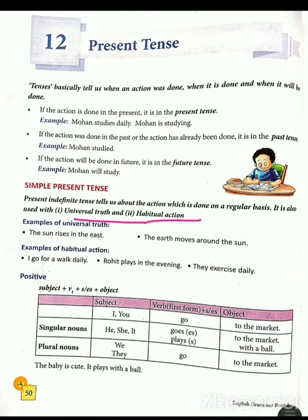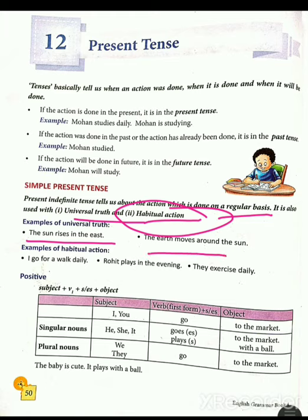Present indefinite tense hume bataata hai action ke baare mein jo hum regular basis par karte hain. It is also used with universal truths — jaise ki prithvi gol hai, so we say 'Earth is round.' Universal truth example: The sun rises in the east — it is a universal truth. The earth moves around the sun. Examples of habitual action: I go for a walk daily. Rohit plays in the evening. They exercise daily.